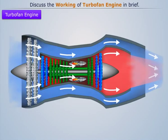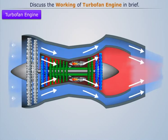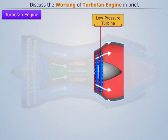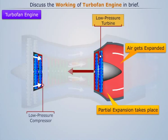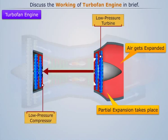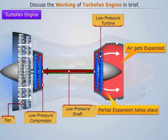The exhaust gas from the high pressure turbine then passes through the low pressure turbine, where it again partially expands. This power produced is used to drive the low pressure compressor and fan through the low pressure shaft.